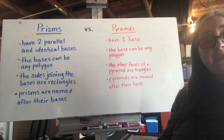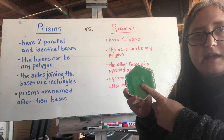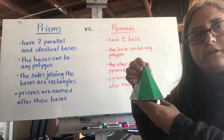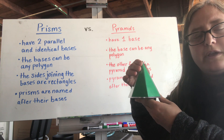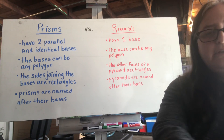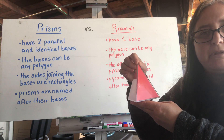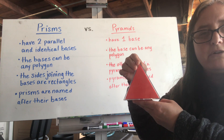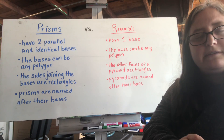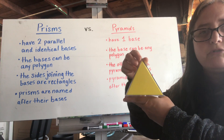Whereas with pyramids, we also have bases that can be any shape — like a hexagon here — but all the other sides are triangles. In a pyramid, we've got these triangular sides. Here is another pyramid — this one actually has a triangle base, but the other sides are all triangles. And here's another one — the base can be anything, this one's a square, but all the other sides of a pyramid are triangles.